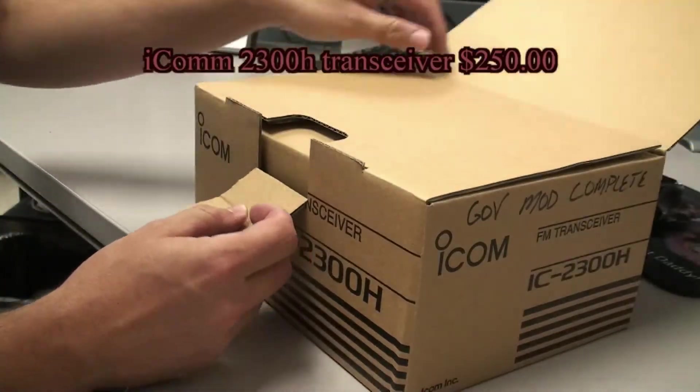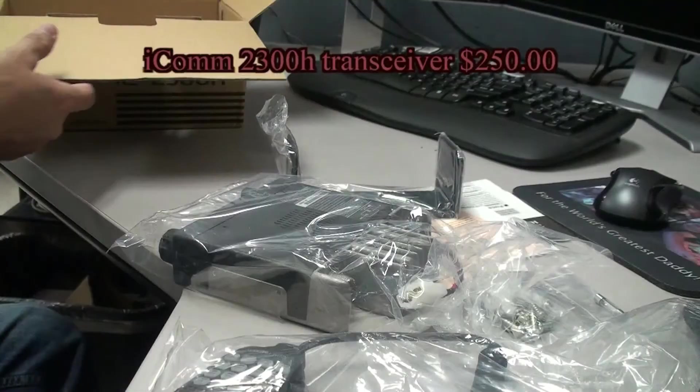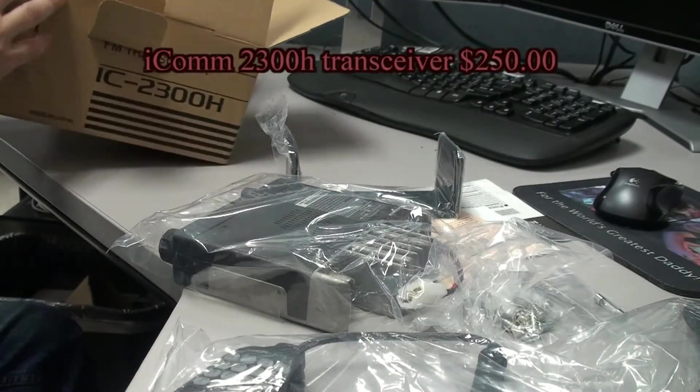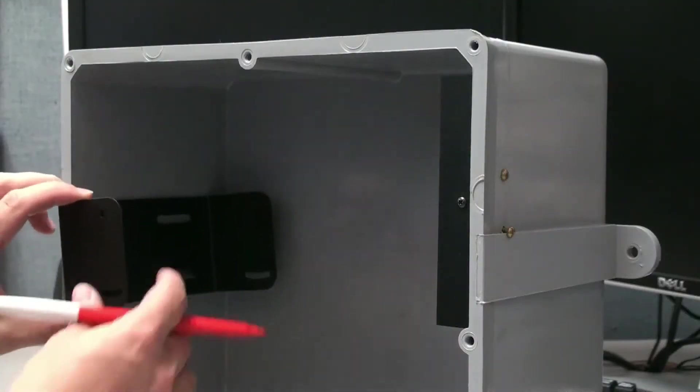Now we're ready to mount the transceiver to the electronics box. We'll mount it to the sidewall, opposite of the TNC, using the supplied dash mount kit.